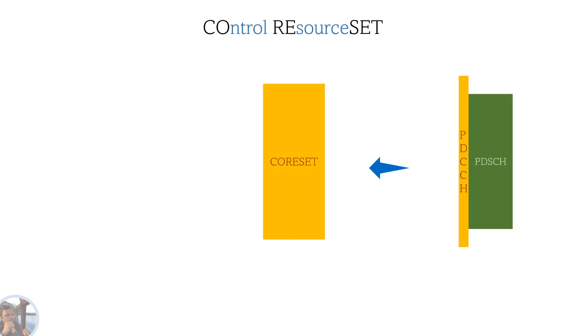Control resource set. CORESET is a set of physical resources that is used to carry PDCCH or DCI. There can be more core sets, so CORESET ID identifies each core set.